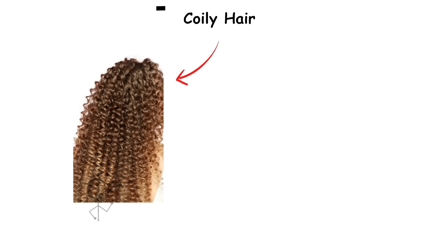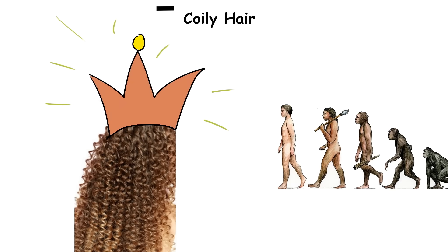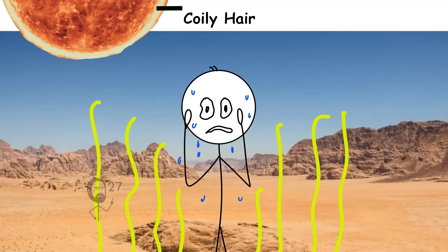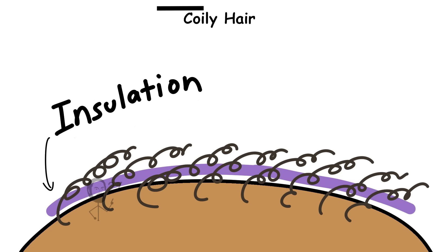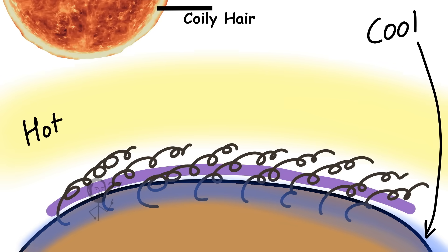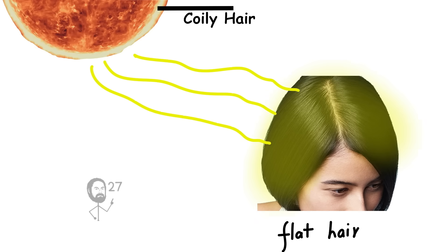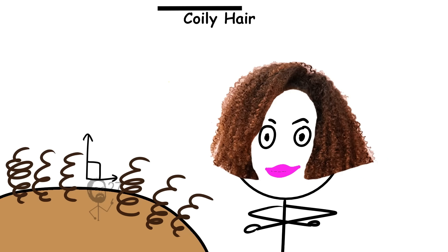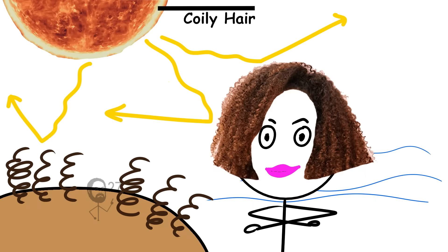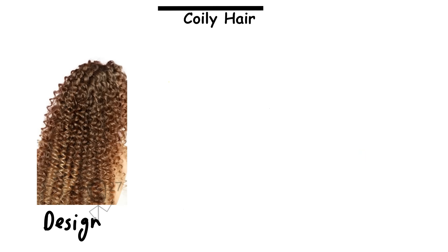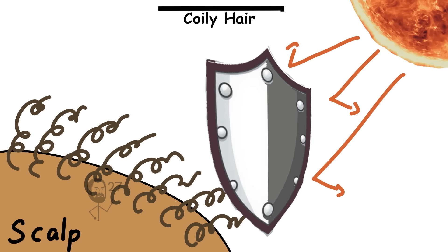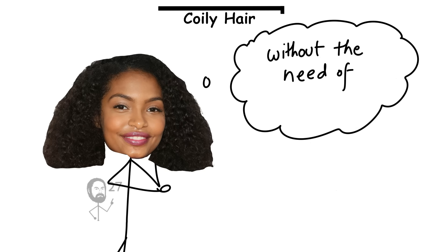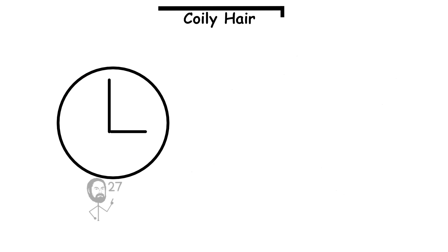Coily hair evolved as a highly specialized response to life under intense sun and heat. Its tightly coiled, spring-like structure creates natural lift off the scalp, forming an insulating air buffer that helps cool the head while reducing direct UV exposure. Unlike flat hair, which absorbs and traps heat, coily hair's vertical geometry allows airflow between the strands and deflects sunlight away from the skin. This design helped early humans regulate body temperature in open, arid environments while protecting the scalp from solar radiation.